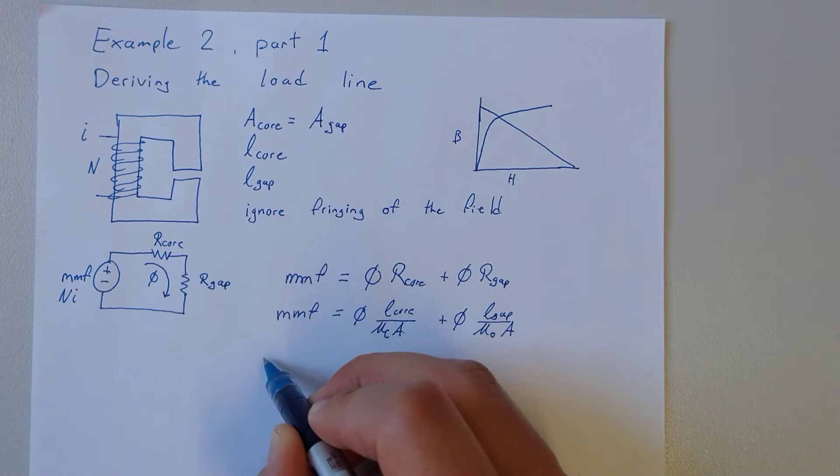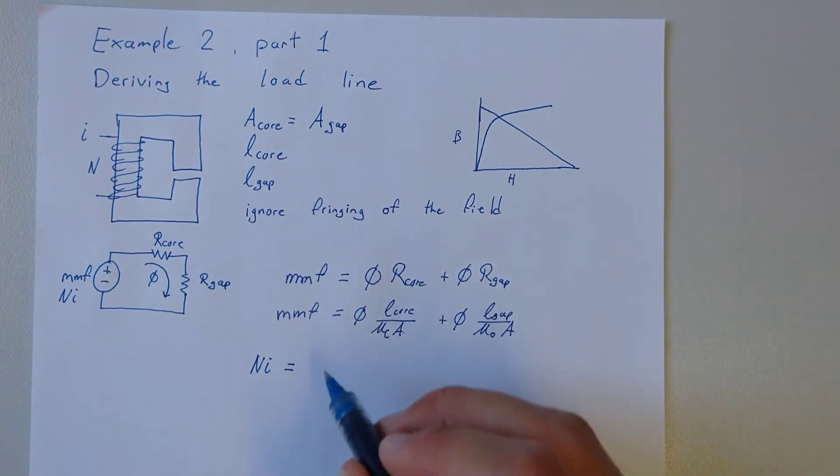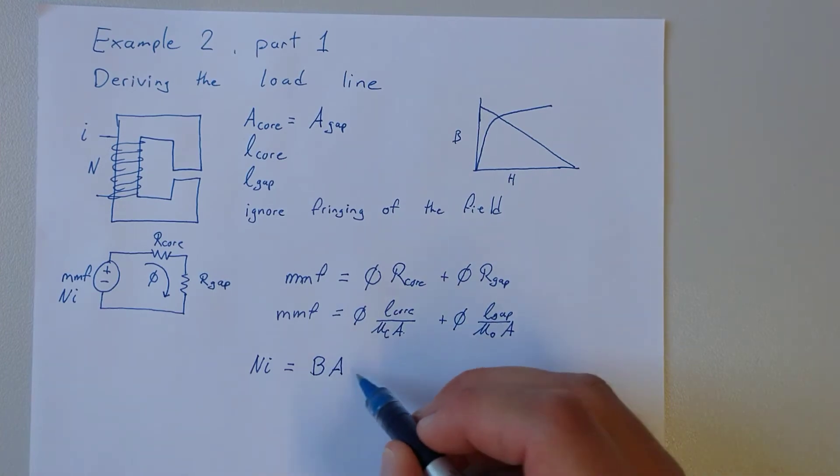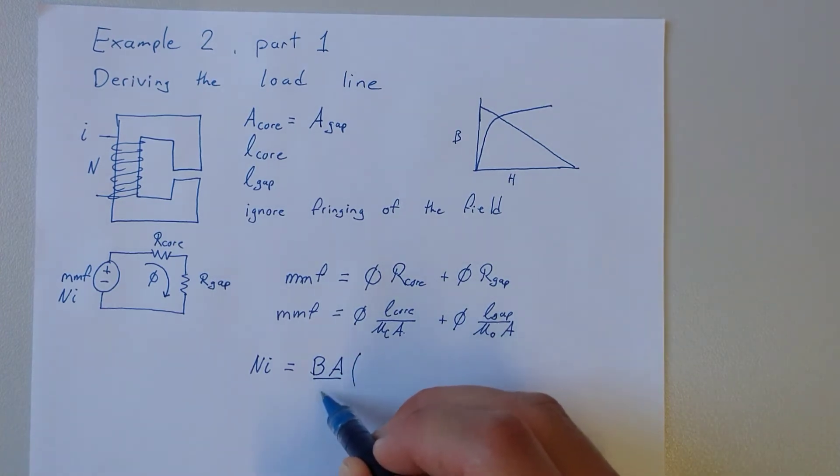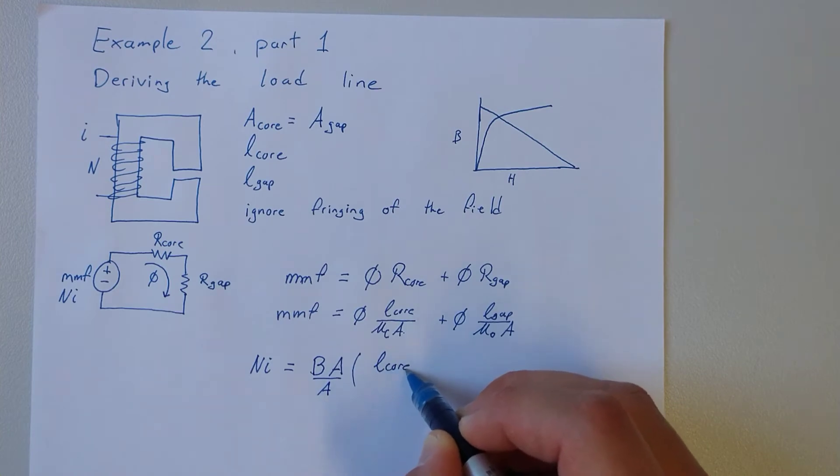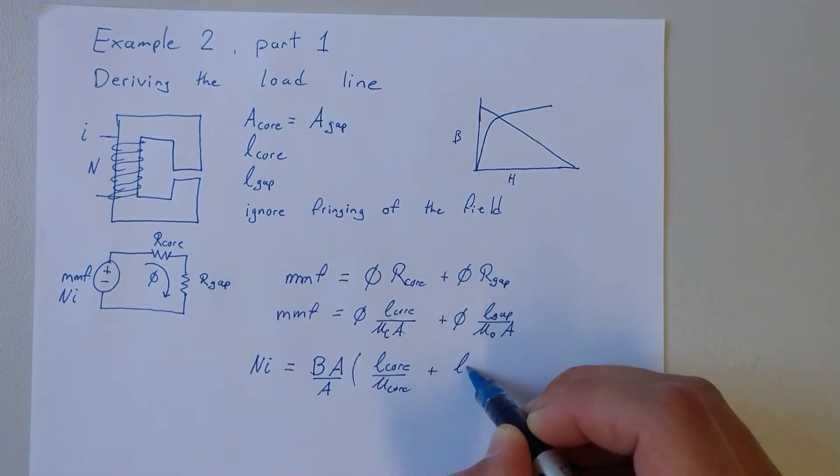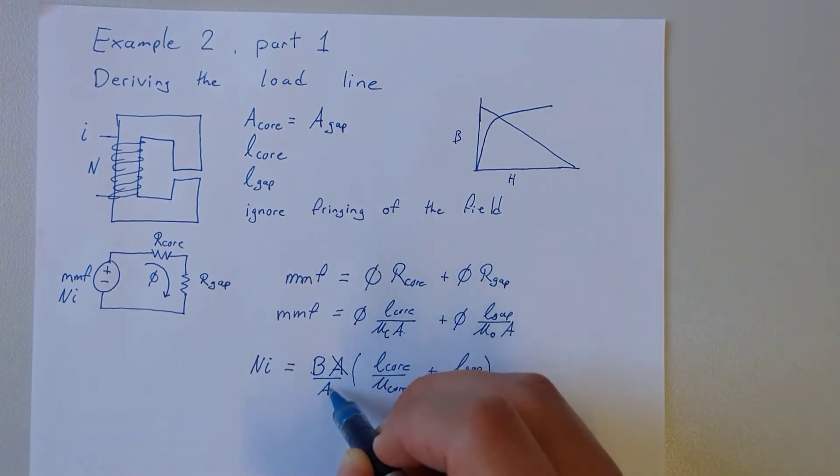We can continue to build this. Ni is equal to, we can replace flux with magnetic field times area, and we can bring the area out front: length of the core from mu core plus length of the gap mu naught. The areas cancel.